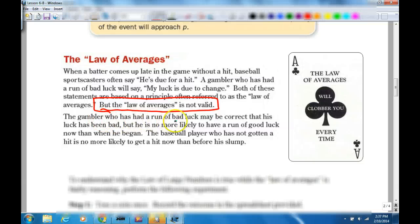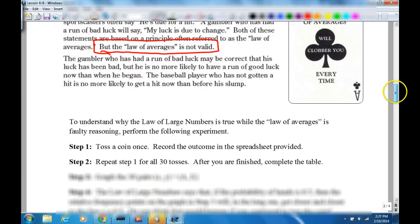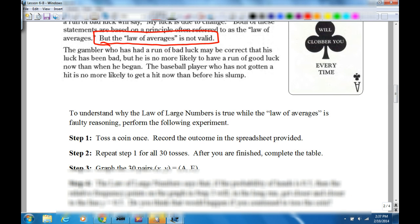The gambler who has had a run of bad luck may be correct that his luck has been bad. But he is no more likely to have a run of good luck now than when he began. The baseball player who has not gotten a hit is no more likely to get a hit now than before his slump. So, be sure you understand that. The probability isn't changing because he's had so many in a row. It's still the same probability.